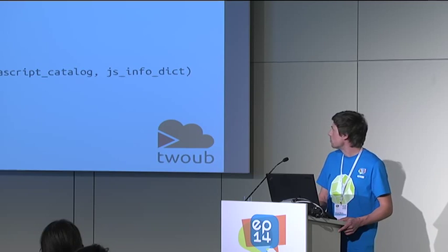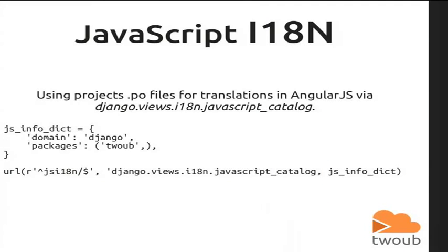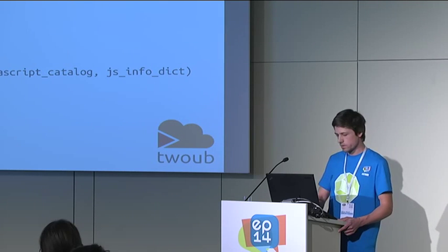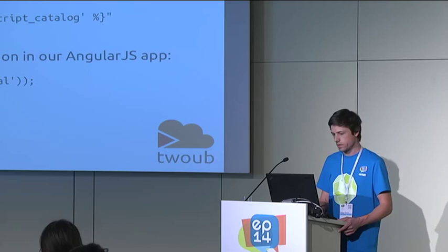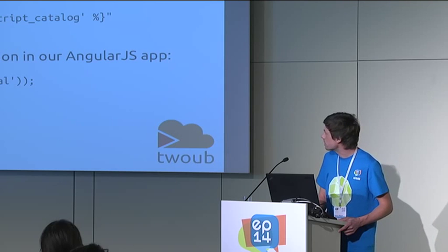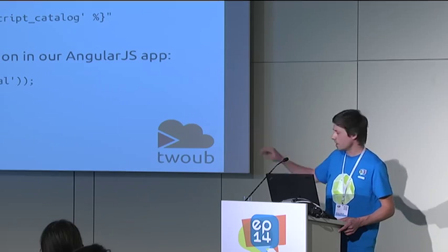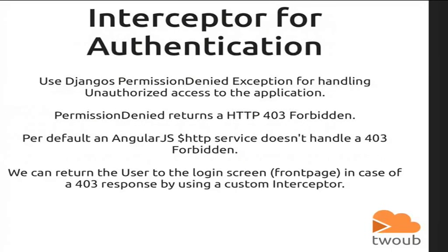For internationalization, Django uses PO files, pretty much like Zope or Plone does. To have a consistent state between the Django side and the JavaScript side, you can use the Django i18n JavaScript catalog, which takes the PO files and generates JavaScript you can include in your site, giving you a function like gettext for internationalization. You wouldn't use document.write in AngularJS — just as an example.